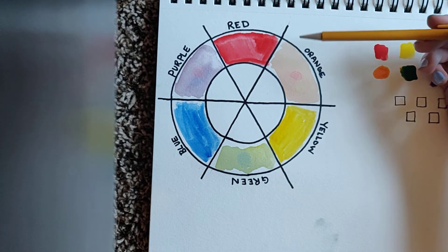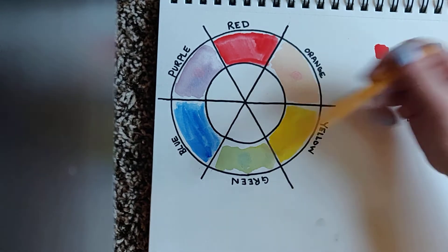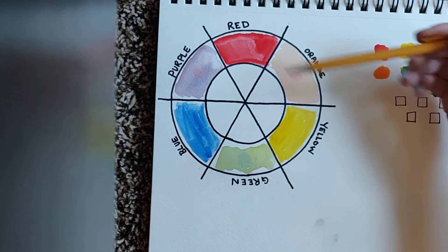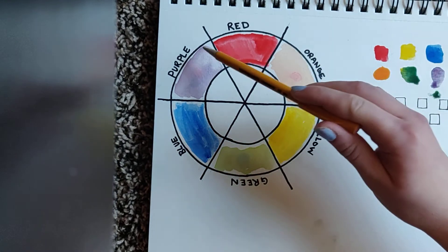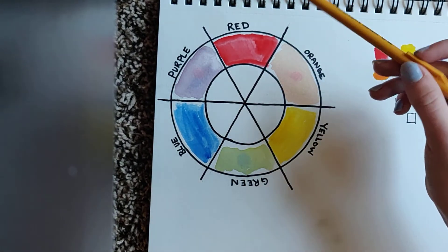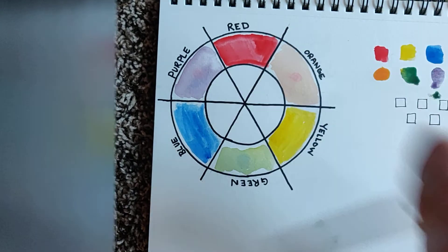The primary colors are red, yellow, blue. The primary colors are red, yellow, blue. Orange and green are secondary. Purple is too. But the primary colors are red, yellow, blue.